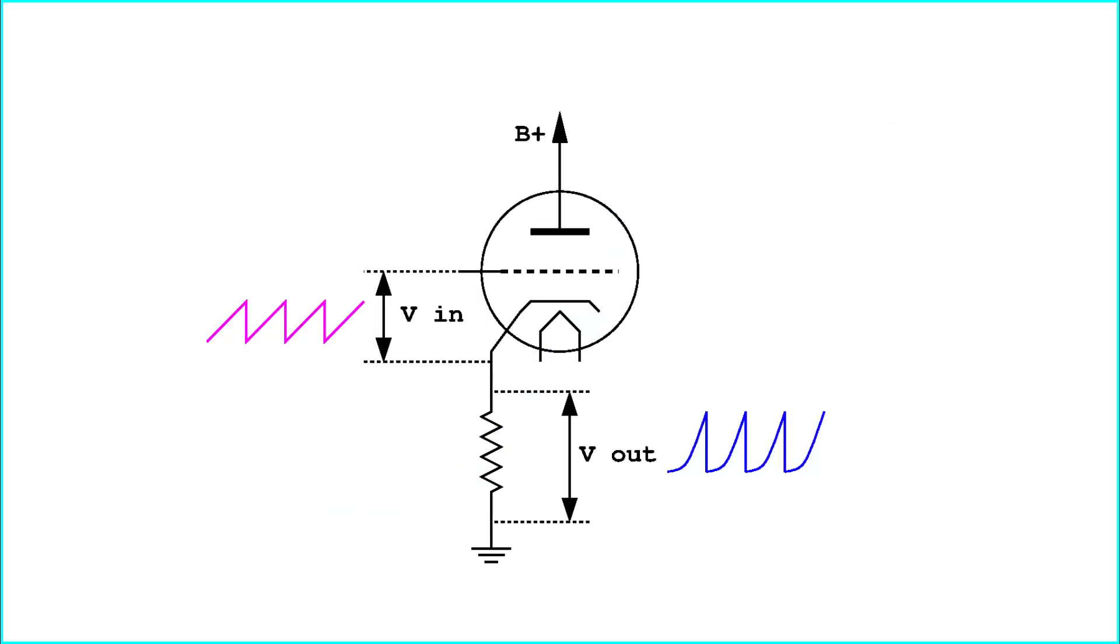In practice, a sawtooth signal is applied between the grid and the cathode, reading the resulting voltage across a cathode resistor. Knowing the value of the cathode resistor, the current passing through can be easily calculated.